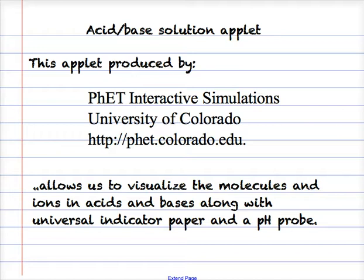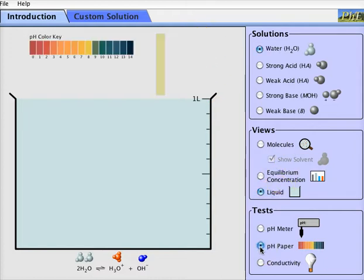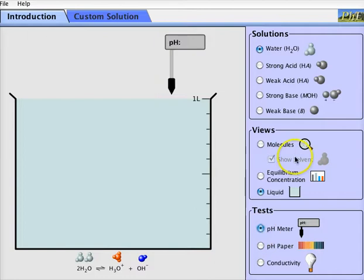We're going to take a look at an applet now which was produced by PHET Interactive Simulations, University of Colorado. This allows us to actually see the molecules in an acid or a base to visualize what's going on. We have a container here with the liquid in. We have a pH probe at the top and we can change that pH probe to universal indicator paper if we want to. Currently, the liquid we're looking at is just water.